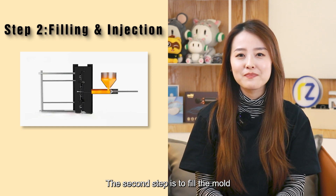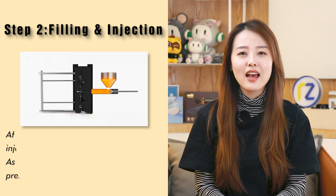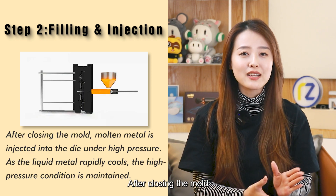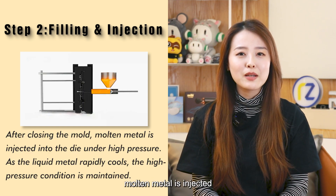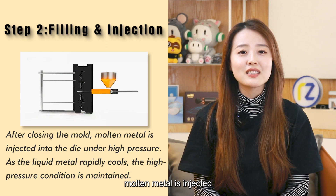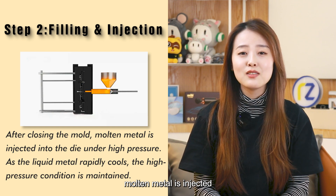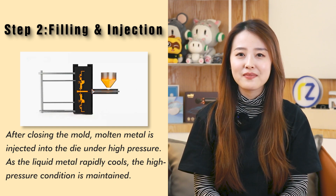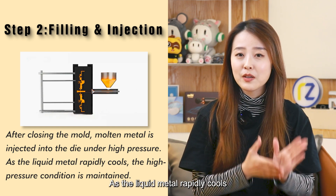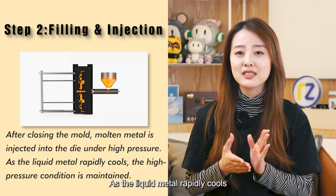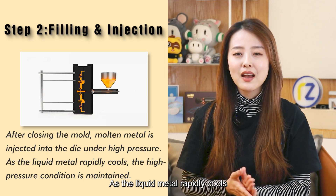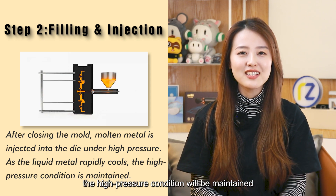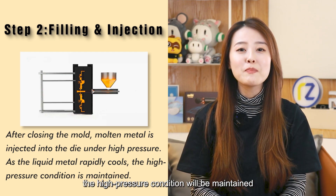The second step is to fill the mold. After closing the mold, molten metal is injected into the die under high pressure. As the liquid metal rapidly cools, the high pressure condition will be maintained.